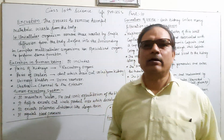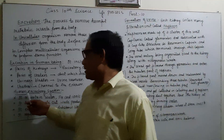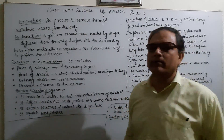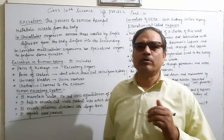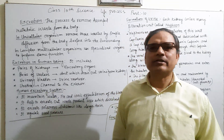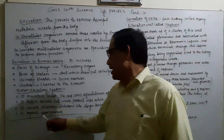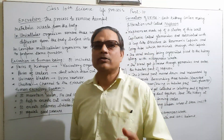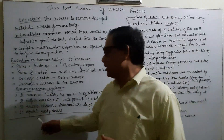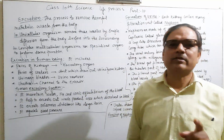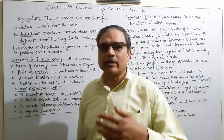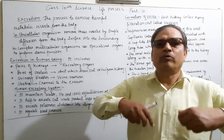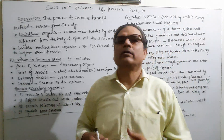The excretory system maintains equilibrium of ionic substances. It excretes out waste products like urea dissolved in the blood. It also removes poisonous substances such as drugs and toxins present in the blood, and it regulates blood pressure by removing waste material from the body.